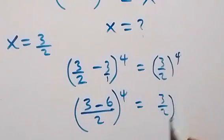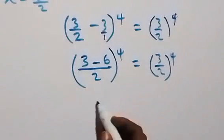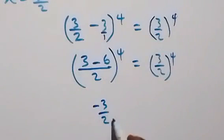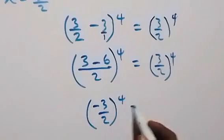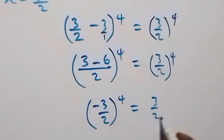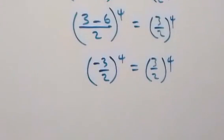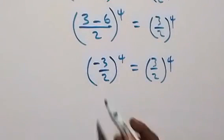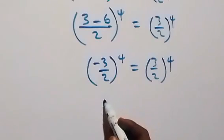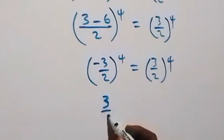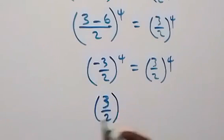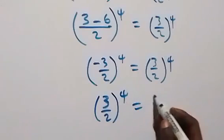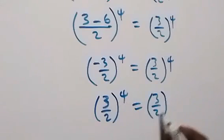That gives us minus 3 over 2 raised to power 4, which equals 3 over 2 raised to power 4. Since we are raising a negative number to an even power, we get a positive result, so this becomes 3 over 2 raised to power 4, which equals 3 over 2 raised to power 4 on the right-hand side.